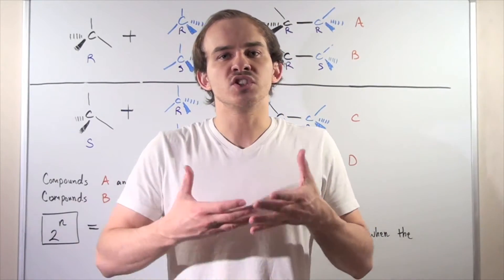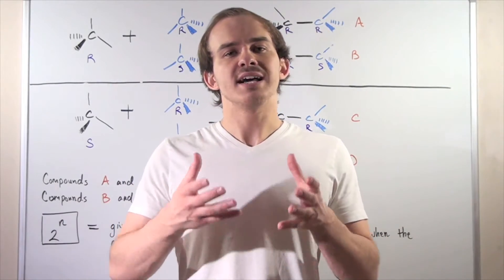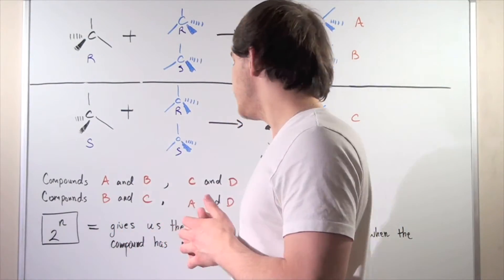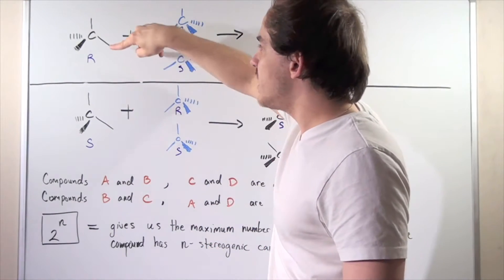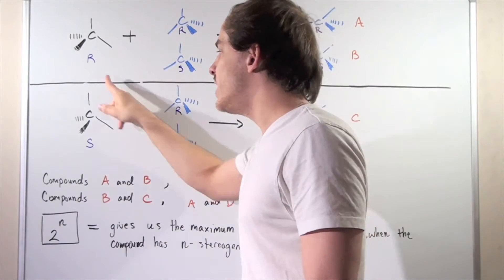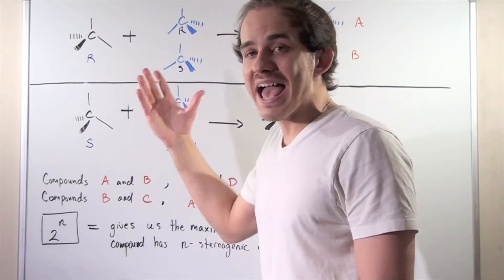In this lecture, we're going to talk about a second type of stereoisomers known as diastereomers. So let's begin by looking at the following pair of enantiomers. So here we have R enantiomer and here we have the mirror image of this R enantiomer called the S enantiomer.